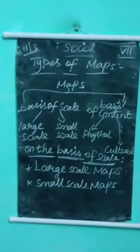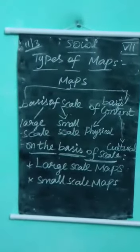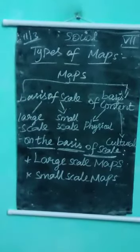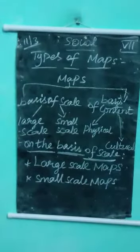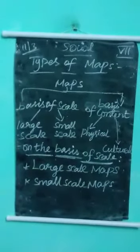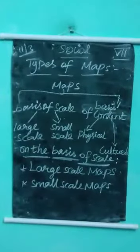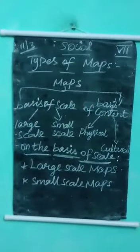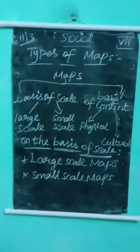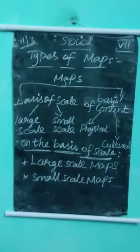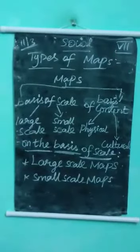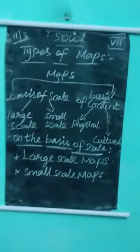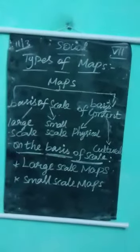Next is the small-scale map. Small-scale maps show large areas like continents and countries. These maps are drawn on a scale of one centimeter equal to one thousand kilometers. Examples of small-scale maps are the wall map and the atlas.